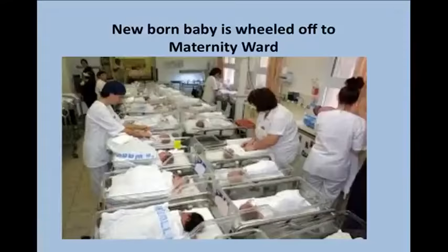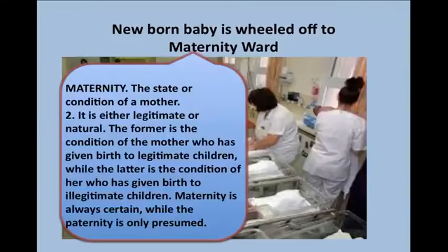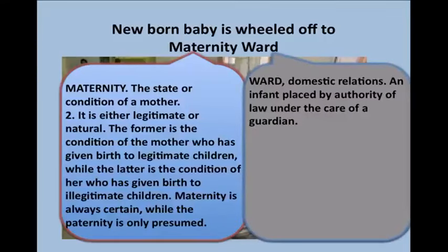The next part that happens in the birth process is that the baby is wheeled off into the maternity ward. We need to look at these words. 'Maternity': the state or condition of a mother — it is either legitimate or natural. The former is the condition of the mother who has given birth to legitimate children, while the latter is the condition of her who has given birth to illegitimate children. 'Ward,' domestic relations: an infant placed by authority of law under the care of a guardian.